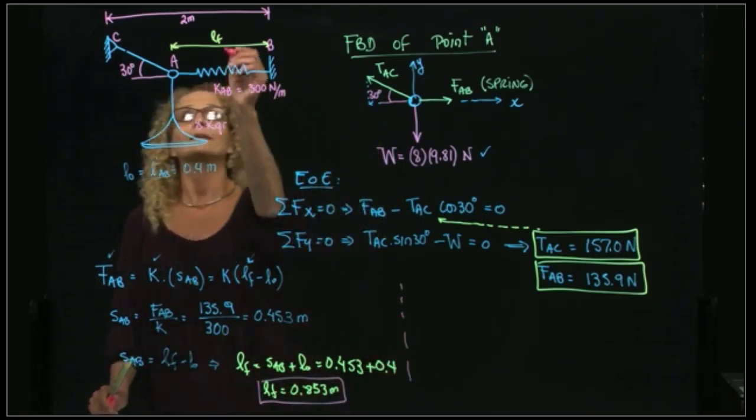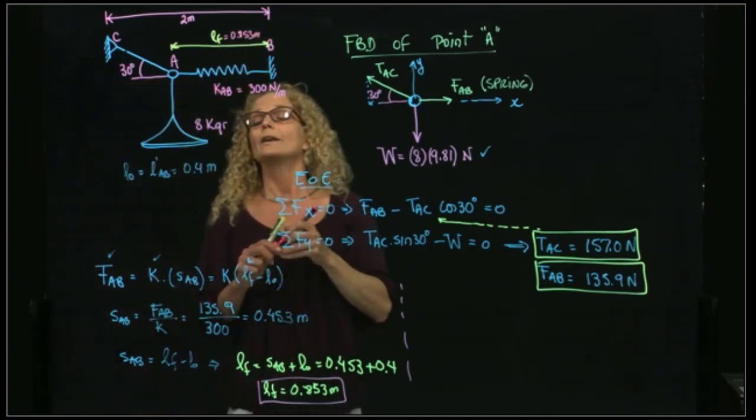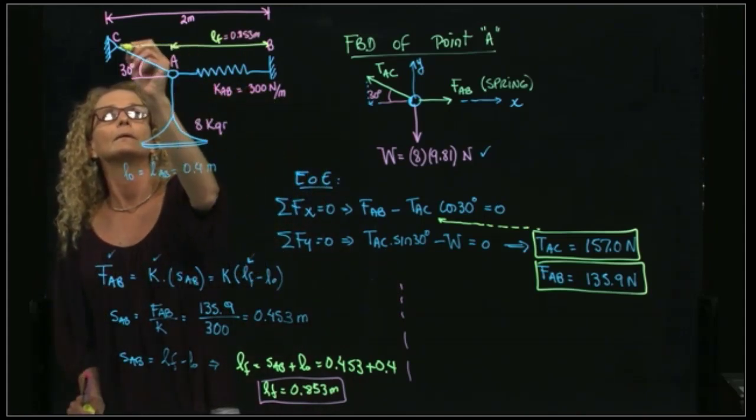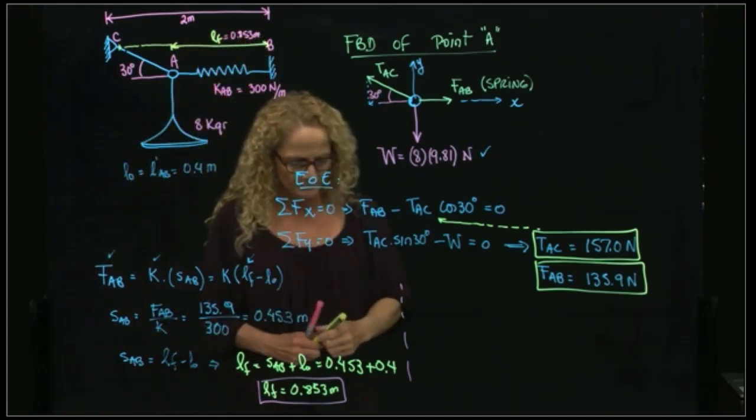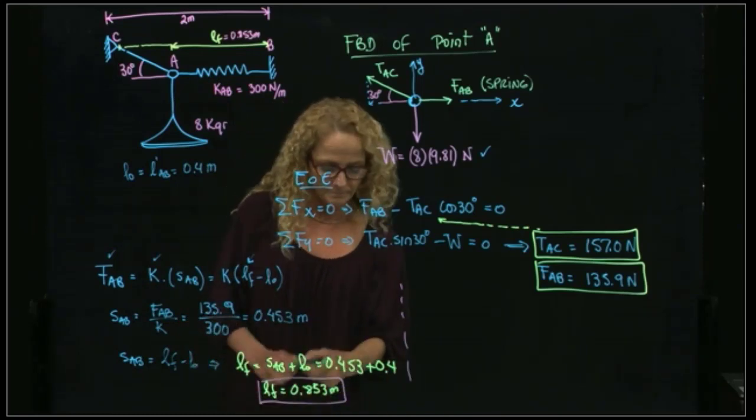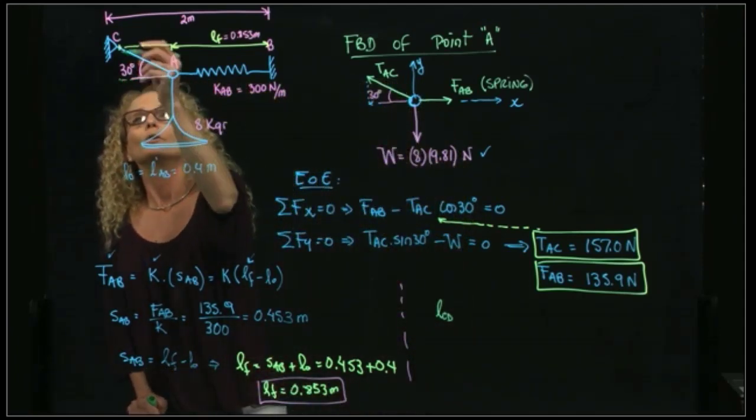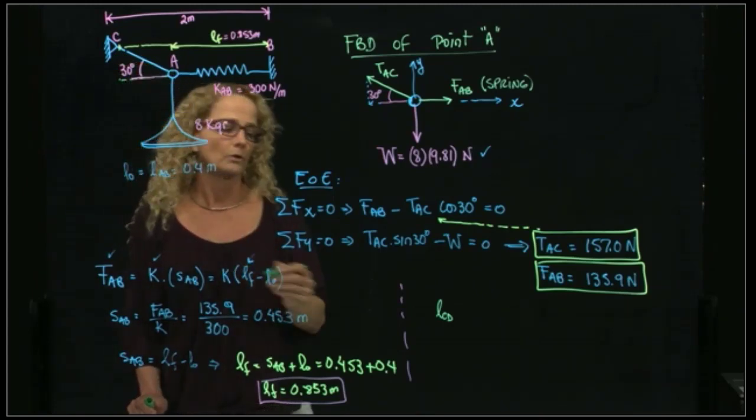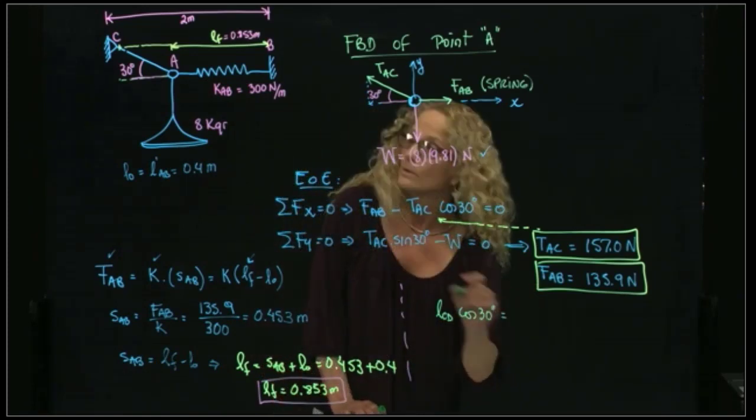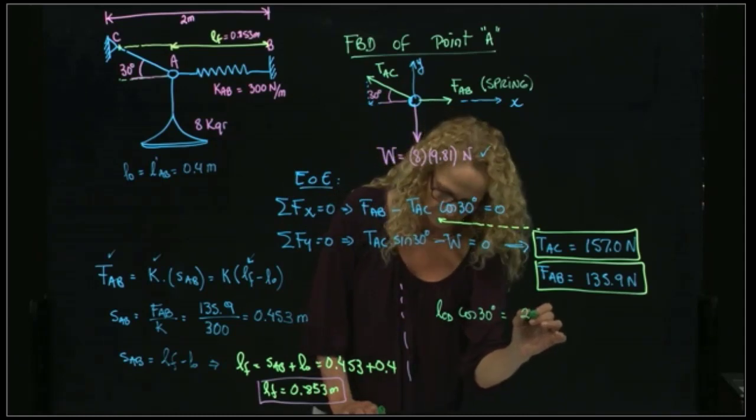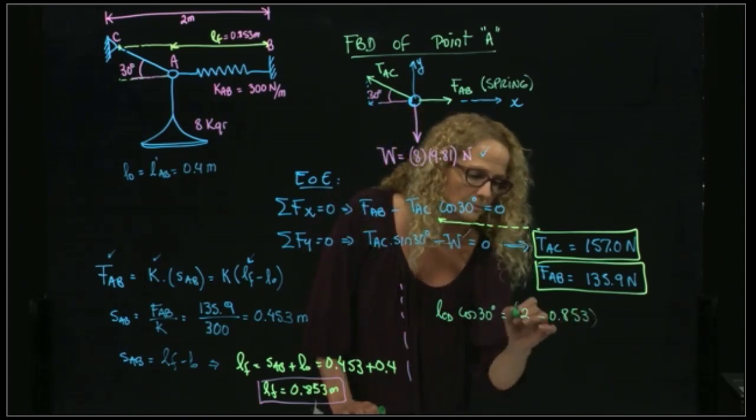So I was able to find this length over here, which is 0.853 meters. So now I'm able to find this length over here. This length over here will be 2 meters minus 0.853. So the length of AC, of course, this will be this times cosine of 30, will be equal to 2 meters minus 0.853 meters.